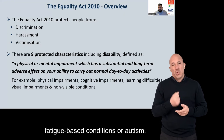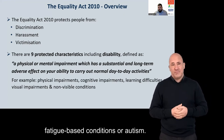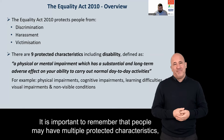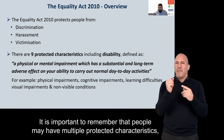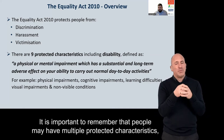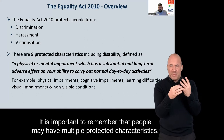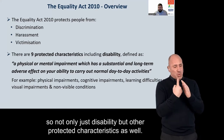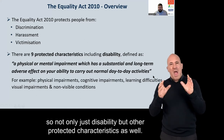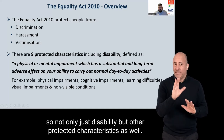Other examples include fatigue-based conditions and autism. It is important to remember that people may have multiple protected characteristics — not only disability, but other protected characteristics as well.